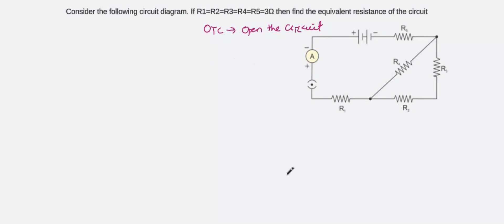Here you see is a circuit diagram. The question is: consider the following circuit diagram. If R1 = R2 = R3 = R4 = R5 = 3 ohm, find the equivalent resistance of the circuit. There are 5 resistors, all with a value of 3 ohm. So we have to find the equivalent resistance of this circuit. Let's start by making this complex looking diagram a bit easier.